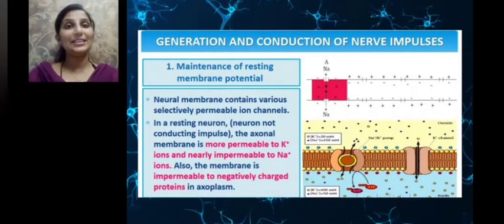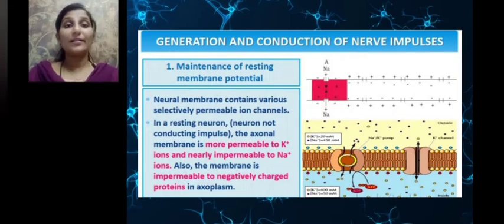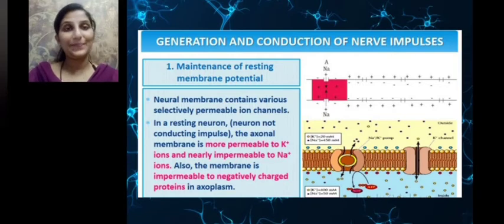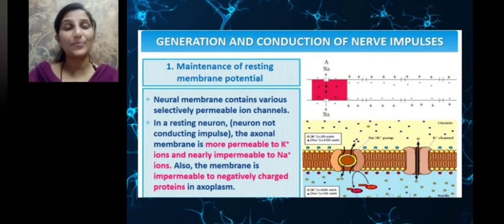First, let us learn about the first step — maintenance of the resting membrane potential. Neurons are excitable cells, meaning they can get excited by getting polarized. The membrane of the neuron gets polarized. The neuron membrane has certain ion channels present on it, and these ion channels are selectively permeable to certain types of ions.